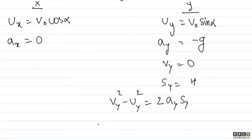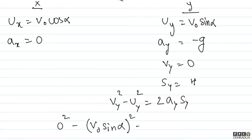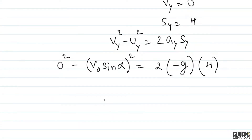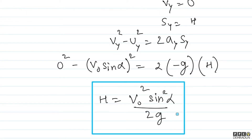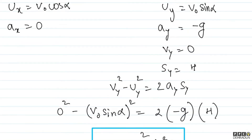Let's put in the values: vy = 0, so 0² − (v0 sin α)² = 2·(−g)·h. From here h = v0² sin²α / (2g). This is the formula for maximum height that we have derived.